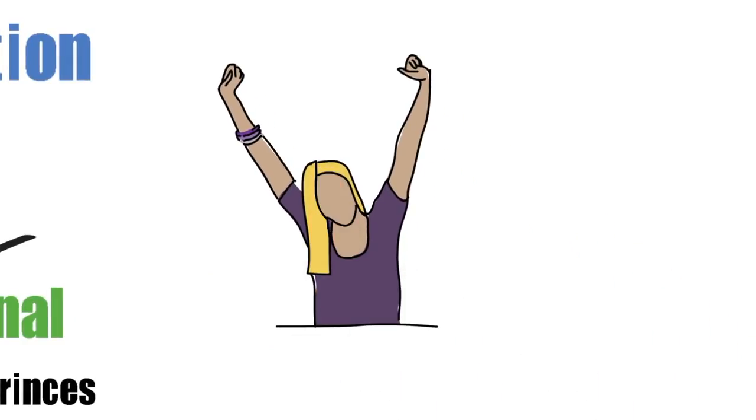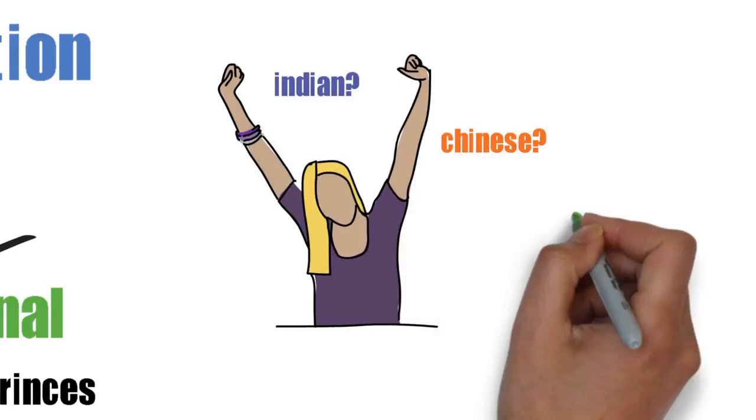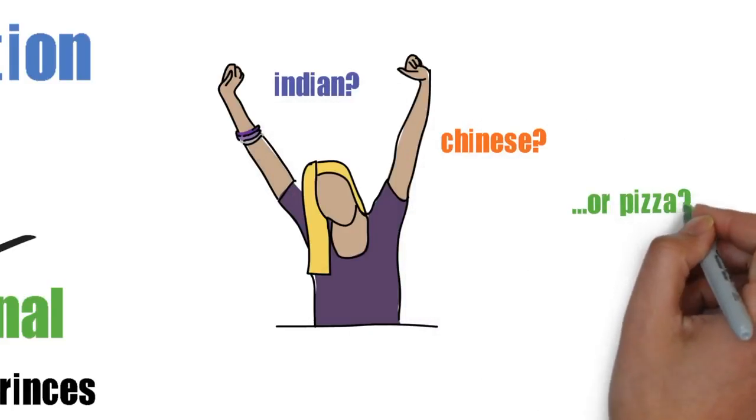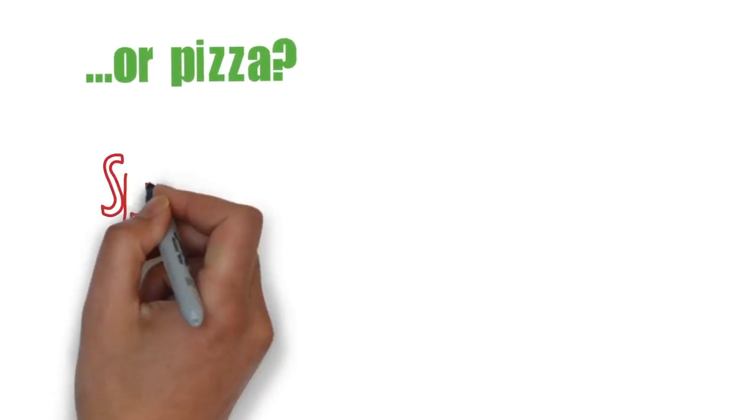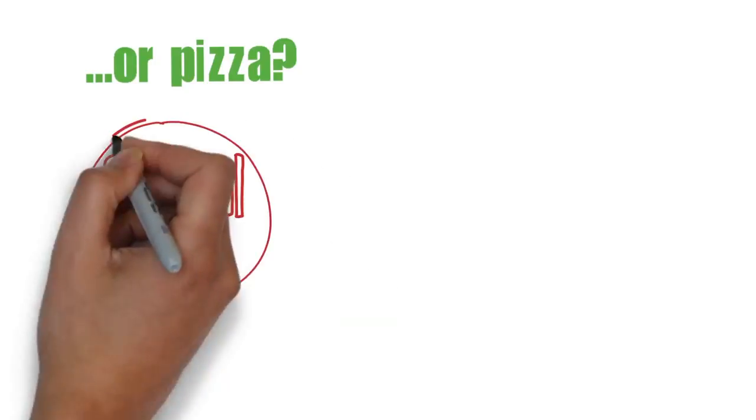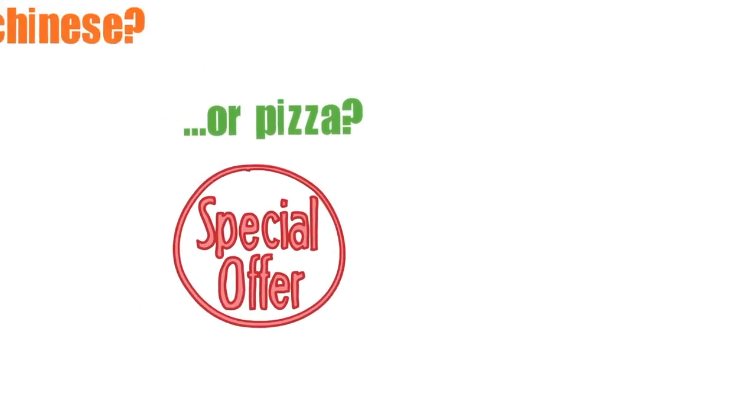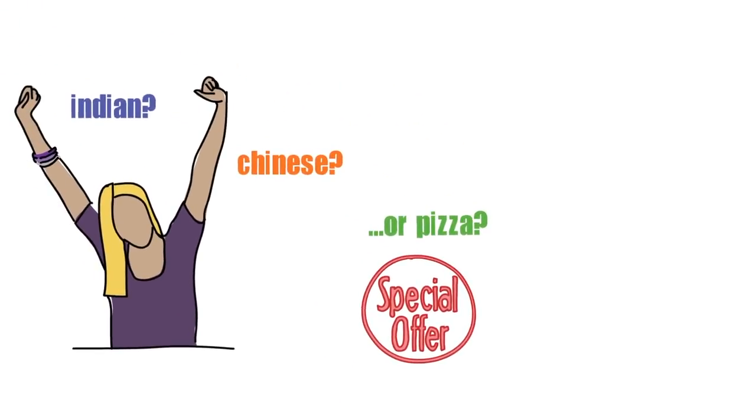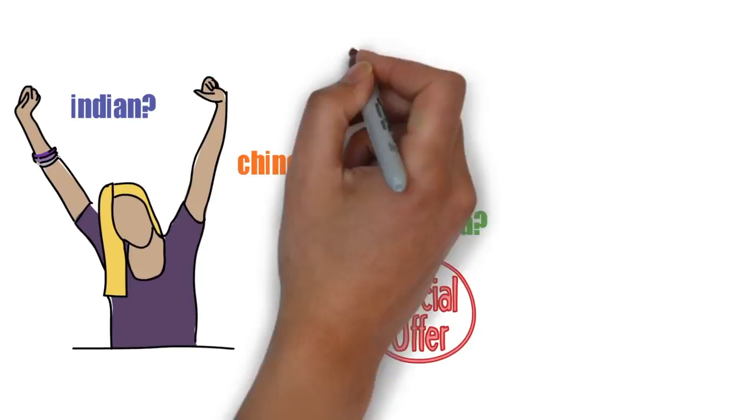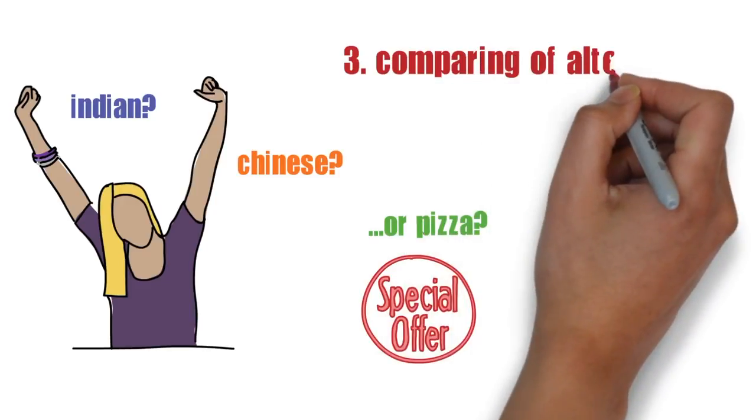What would it be today you think: Indian, Chinese, or some nice crusty pizza? You are already hungry and these pictures of food on the leaflets are torturing you. A buy one get one free offer catches your eye. It's from a local pizzeria just one block away. This option feels right. It will be quick and inexpensive. You decide this is the solution to your problem.